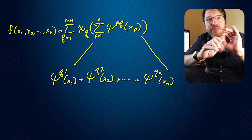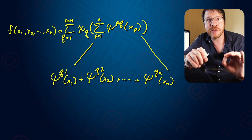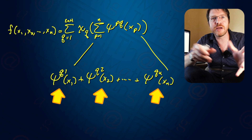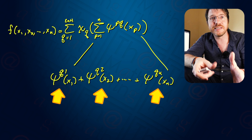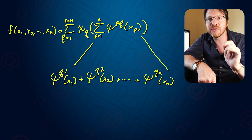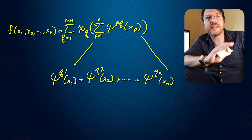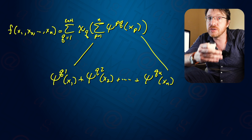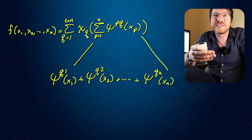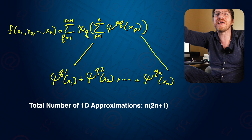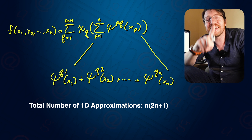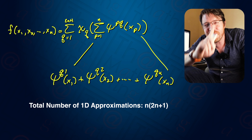Looking at the structure: we isolate each dimension of the independent variable, put them each individually into a function, and then recombine them through addition. This means that if we can figure out how to find each one of these functions individually, we never have to go to higher dimensions. We can just do a whole bunch of one-dimensional approximations, and so instead of needing 10^n basis functions, we only need n times 10. This is dramatically better.